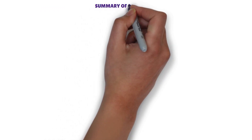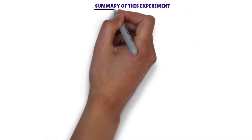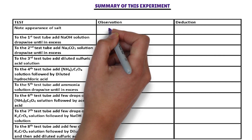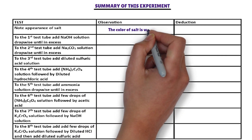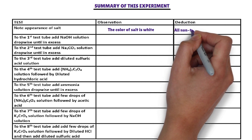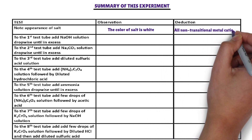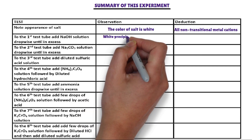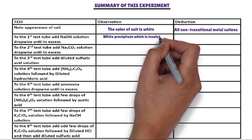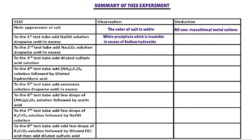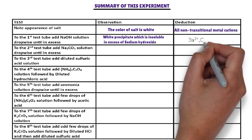Summary of this experiment. The white color of salt indicates that the cation present in the salt is a non-transitional metal cation, for example group 1, group 2, group 3, or group 4 cations. In the first test tube, sodium hydroxide solution is added. The cations that form a white precipitate with sodium hydroxide that is insoluble in excess are magnesium ion, calcium ion, and barium ion.